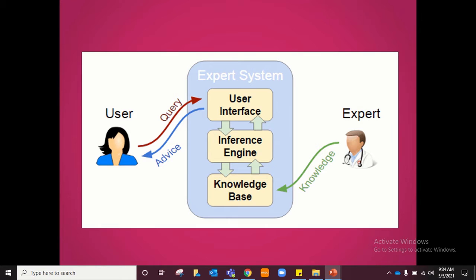The components of an expert system are as follows. It has a user interface, which is what the user is in contact with. The user will ask a query or question through the user interface, and the user interface will give an answer as advice. To get this answer, it works with the inference engine, which in turn works with the knowledge base — the big database. The knowledge base is built with expert advice from specialists in different topics: doctors for medical, scientists for animal species identification, and so on.